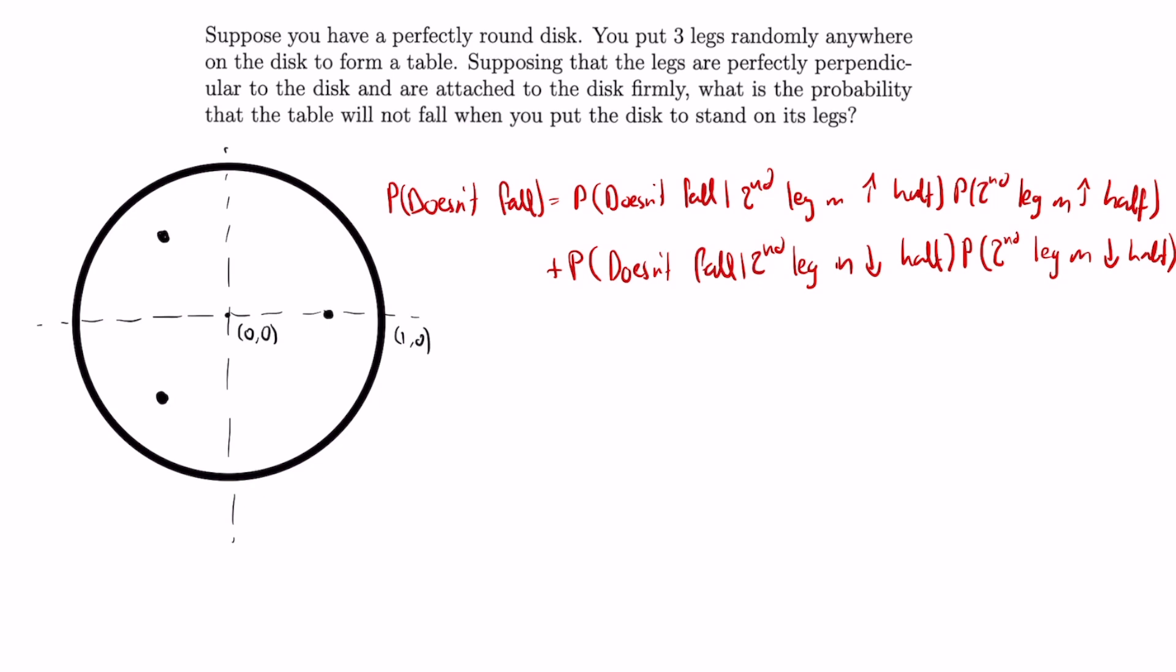Since the second leg is equally likely to be on the upper half and the lower half of the disc, the second probabilities are just one half, and by symmetry, the first two probabilities are the same as well. Therefore, the probability that the disc doesn't fall is equal to the probability that the disc doesn't fall given that the second leg is on the upper half of the disc.